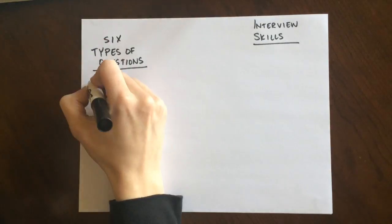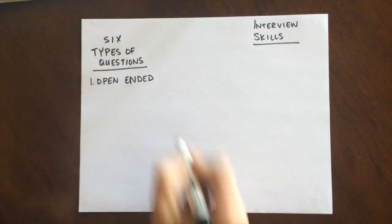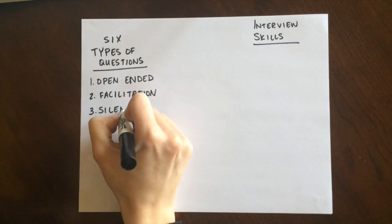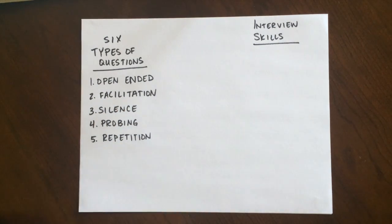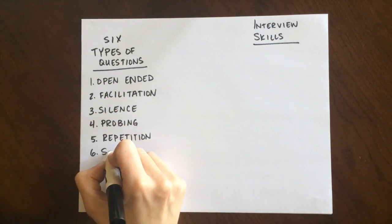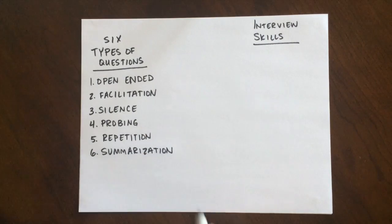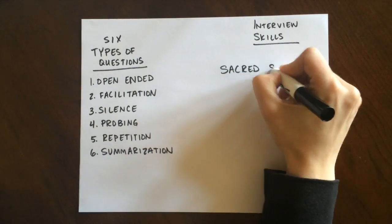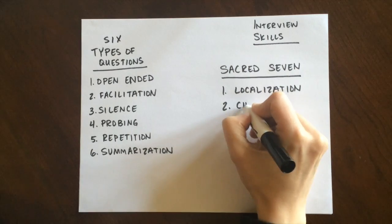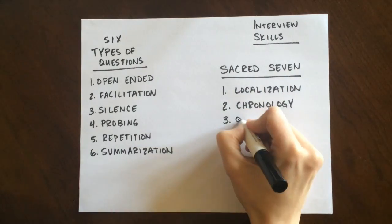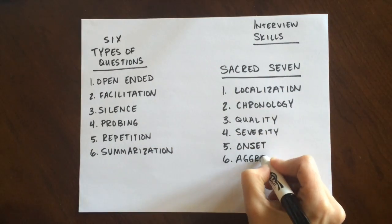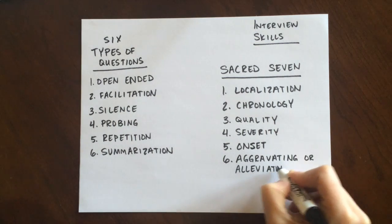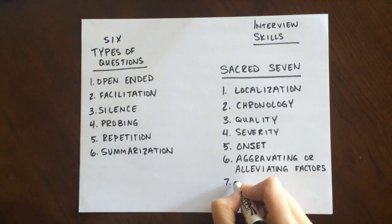During his interview, Sam used six types of questions: open-ended, facilitation, silence, probing, repetition, and summarization. The sacred seven are: localization, chronology, quality, severity, onset of symptoms, aggravating or alleviating factors, and associated manifestations.